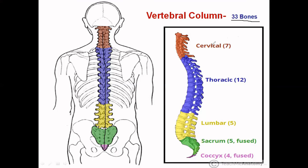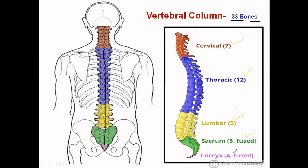Number one: cervical vertebrae — 7 vertebrae present in the neck region. Number two: thoracic vertebrae — 12 vertebrae present in the chest region. Number three: lumbar vertebrae — 5 vertebrae present in the upper abdomen. Number four: sacrum — 5 fused vertebrae present in the lower abdomen. Number five: coccyx (tailbone) — 4 fused vertebrae at the base.